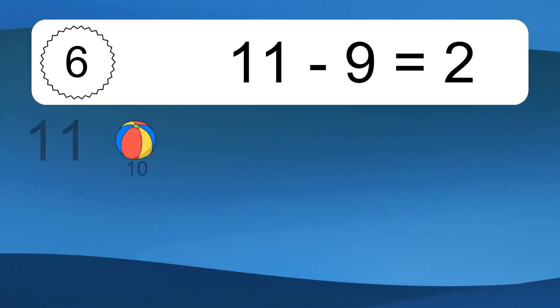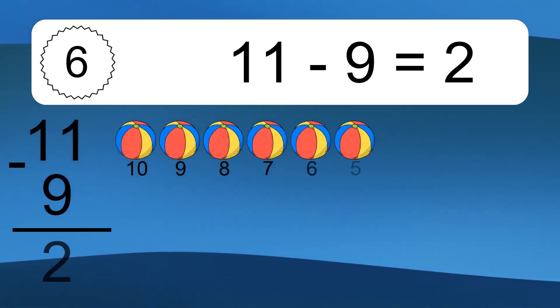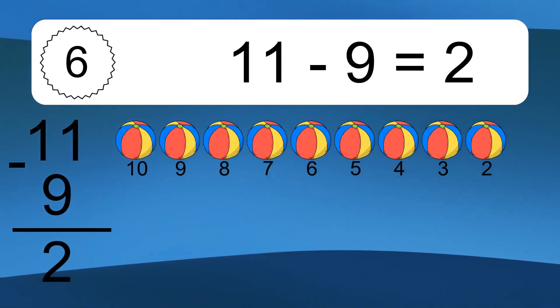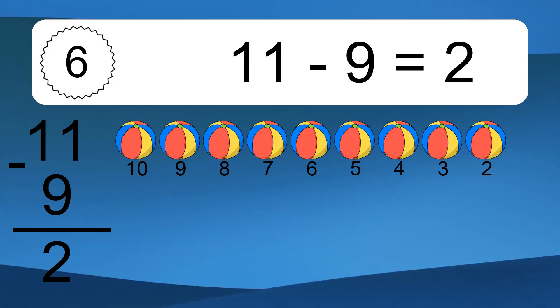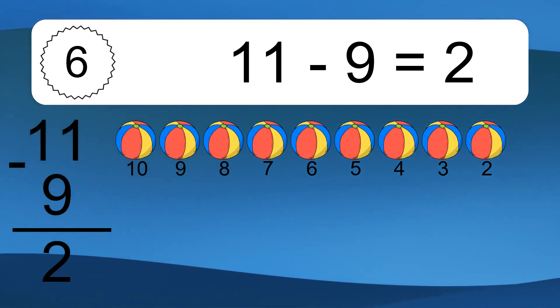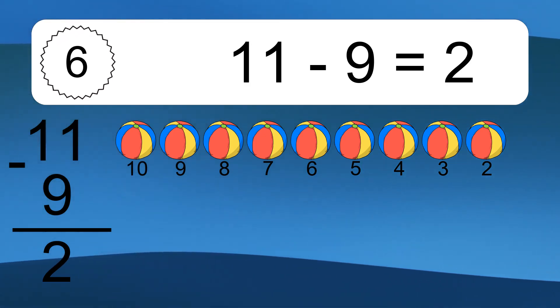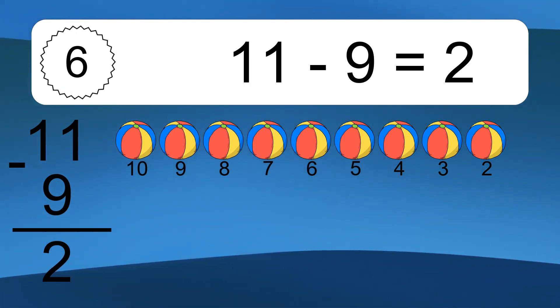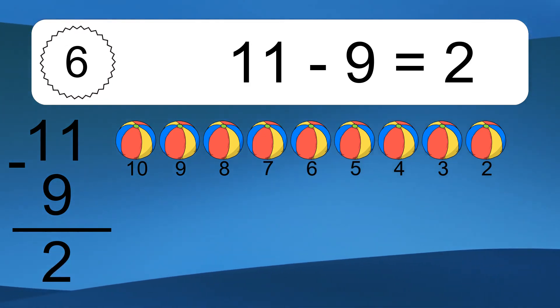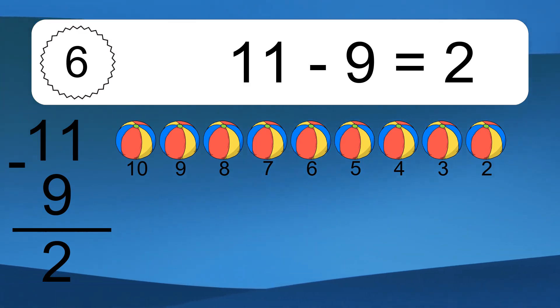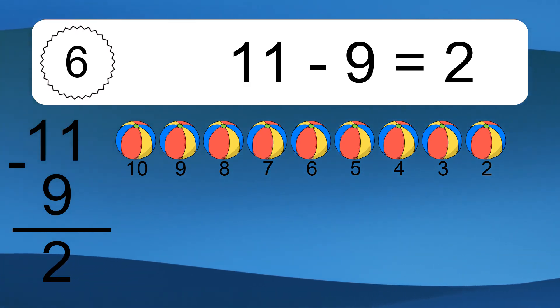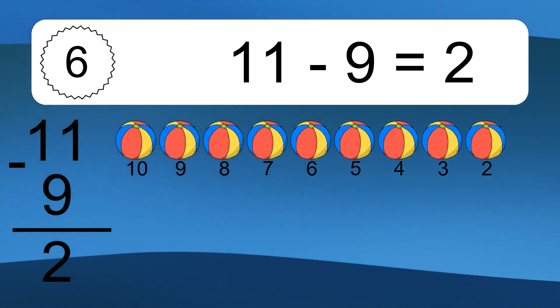11 minus 9 equals what? 11 minus 9 equals 2. Let's count it. 10, 9, 8, 7, 6, 5, 4, 3, 2.